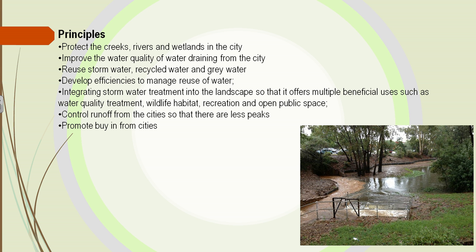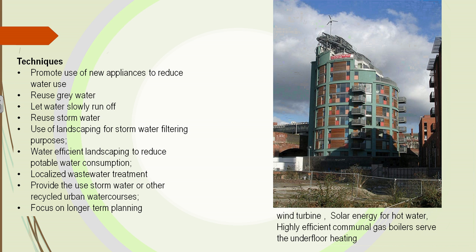We have to have buy-in from people, though. We have to be able to use water in a more efficient way. Here's a building where they have a wind turbine for energy and solar power to heat the water. The water that comes from sinks and toilets can be filtered and reused again. Stormwater can be reused again without having to clean it up as much if we protect it initially. We have to focus on long-term planning to protect ourselves in the future.